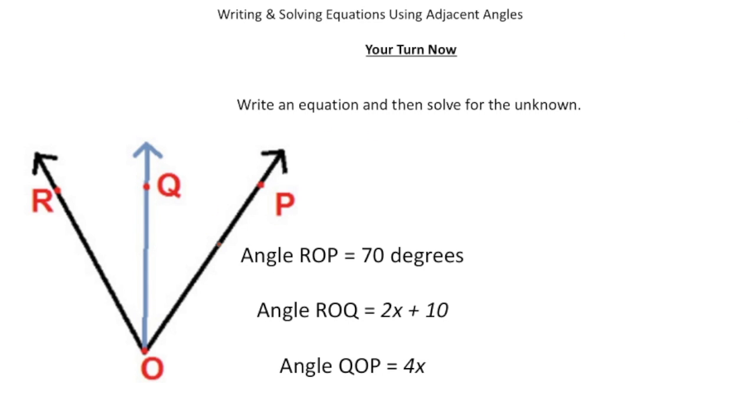So for this one, you know that angle ROP is 70 degrees. So that means the entire angle, the whole thing is 70 degrees. And we know the angle ROQ, so ROQ, this angle right here, we know is 2X plus 10. And we know that angle QOP, which is this one, is 4X. And because we know that the angles are adjacent, they're going to add up to 70 degrees.